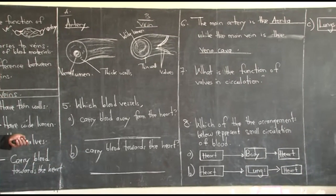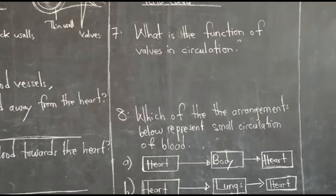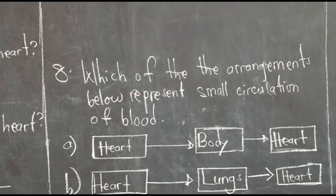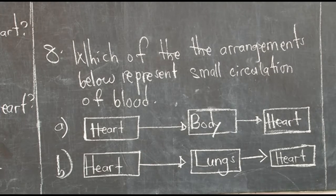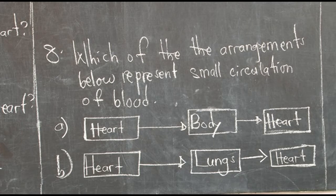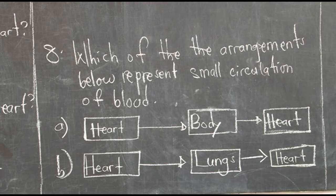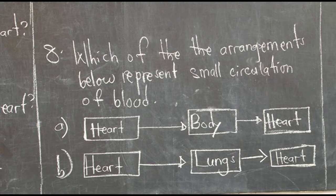Number eight asks: which of the arrangements below represents small circulation of blood? Remember, blood circulation is the movement of blood in the body. There are two types of blood circulation — small circulation and big circulation. They can give you different arrangements and ask what type each represents.